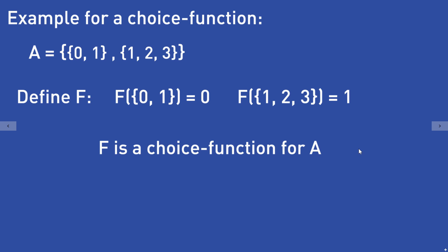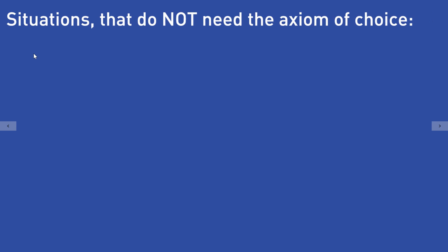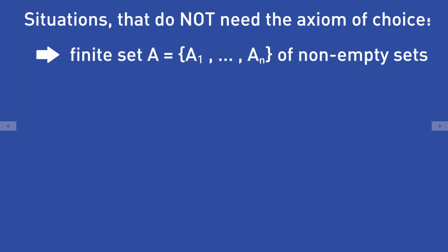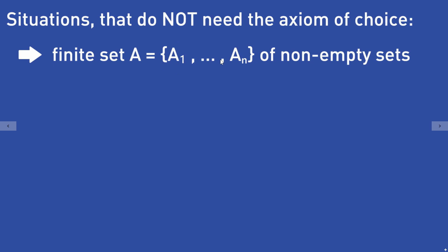The axiom of choice postulates that it doesn't matter how the set A looks like — as long as it only contains non-empty sets, a choice function exists. When do I need the axiom of choice? For a finite set of non-empty sets, it is easy to write down a choice function: just pick any element from each of the sets. So there is no need for the axiom of choice.